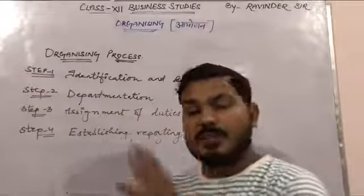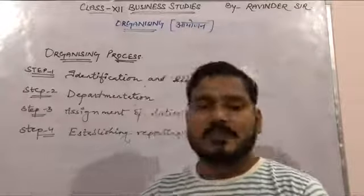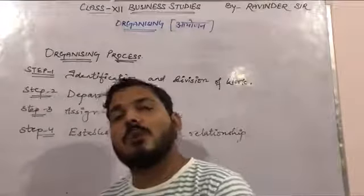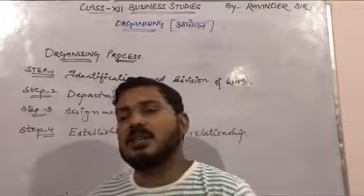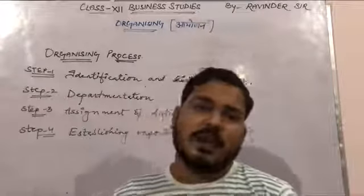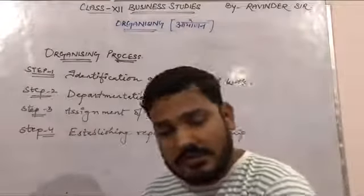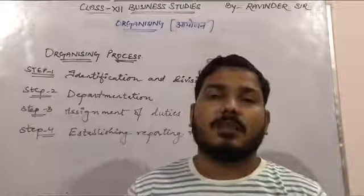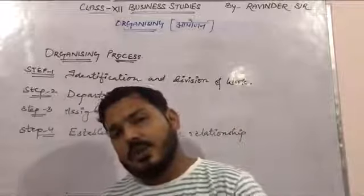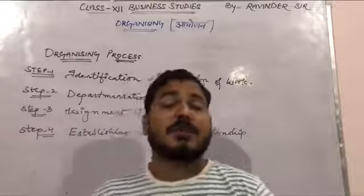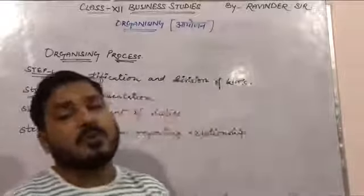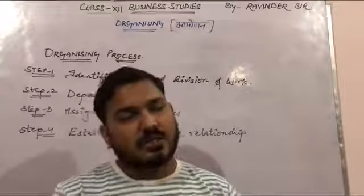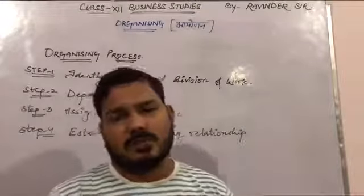Job allocation is done on the basis of qualifications, experience, skills, and abilities. We tell each employee that they have to perform these specific activities and these specific jobs. In this assignment of duties, we give a clear job description to employees, detailing what work they have to do. This provides detailed information through the job description.